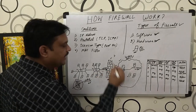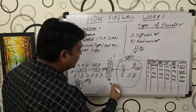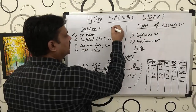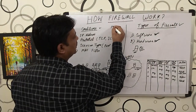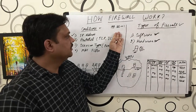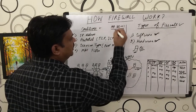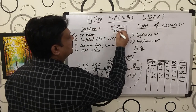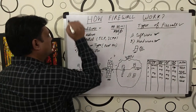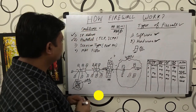Now let us understand the conditions you can configure in the firewall. First is IP address. For example, you can give a condition that if a packet's header contains the IP address 192.168.10.1, and you have set it to allow, it will allow; if you say block, it will block. So you can filter traffic based on IP address. Second, you can filter packets based on protocol.